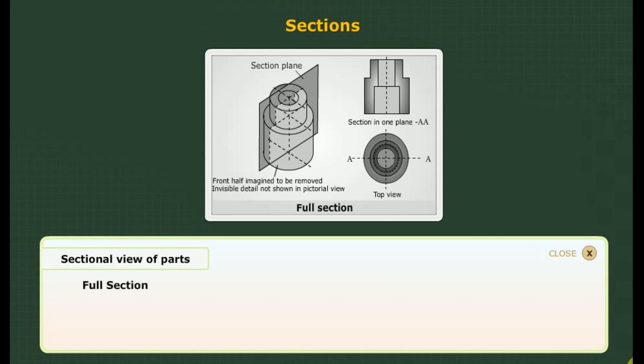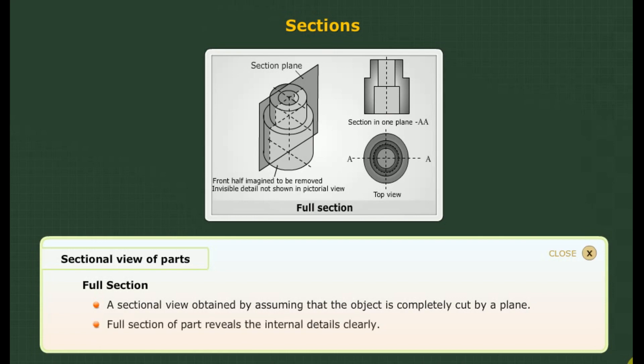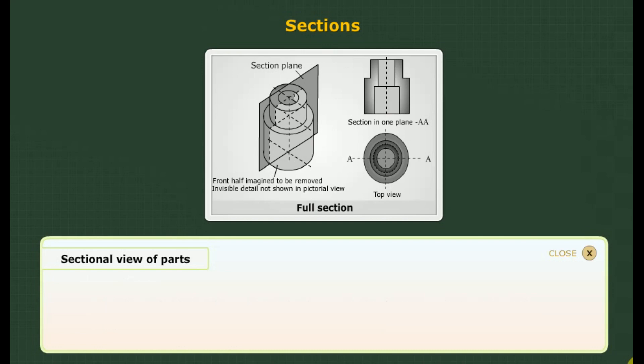Full section: A sectional view is obtained by assuming that the object is completely cut by a plane. With such a full section, internal details can be revealed clearly. Consider a rectangular object with a hollow projection on top — imagine a plane that cuts vertically through the center of the object in order to reveal hidden features clearly.